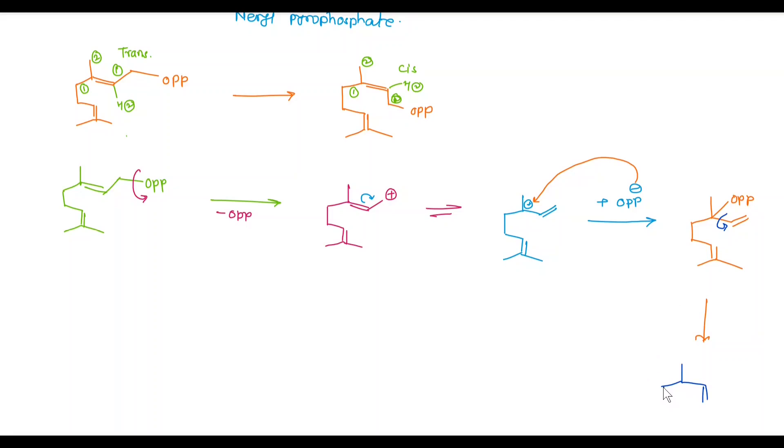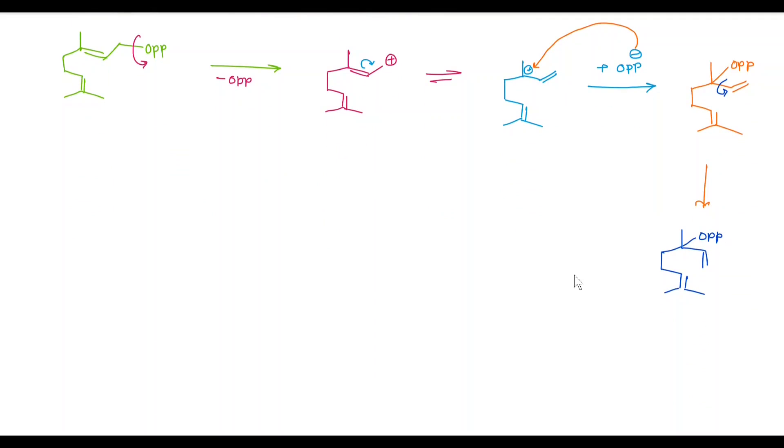In the next step, rotation takes place of this carbon-carbon single bond and we get here CH2, CH2, CH2, CH3, CH2, CH3, here OPP. In the next step, loss of OPP and we get this moiety here with a new positive charge. In the next step, again addition of OPP takes place to this double bond. This bond gets shifted here and we get here OPP, here CH2, CH2, CH double bond CH3 and CH3. That is NPP, neryl pyrophosphate.